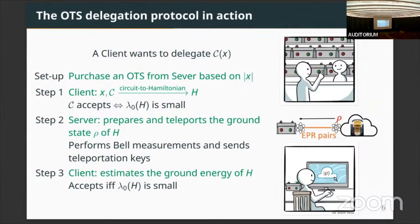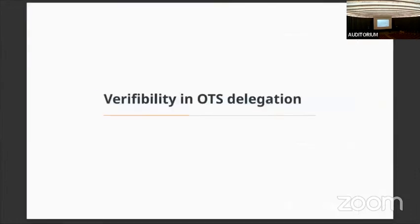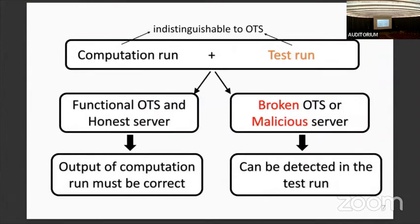The ground energy is low if and only if this is an accepting instance. I will refer to step 3 as the energy test, or the computation run of this protocol. Of course, this is not enough to verify the computation — we actually need to incorporate a test run with the computation. The trick is: with some probability you will conduct the computation run, and with some probability you will add a test run. Importantly, the computation run and test run are indistinguishable to the off-the-shelf device. If your off-the-shelf device is functional and your quantum server is honest, then they can pass — this is the necessary and sufficient condition to pass the test run, and then you can claim that the output of the computation run must be correct.